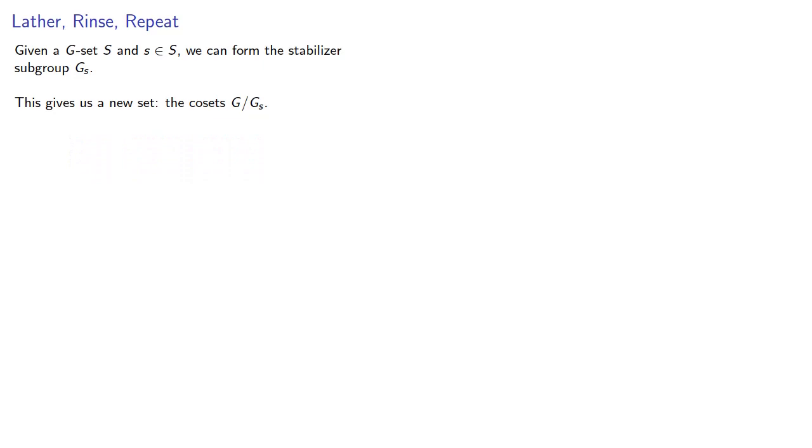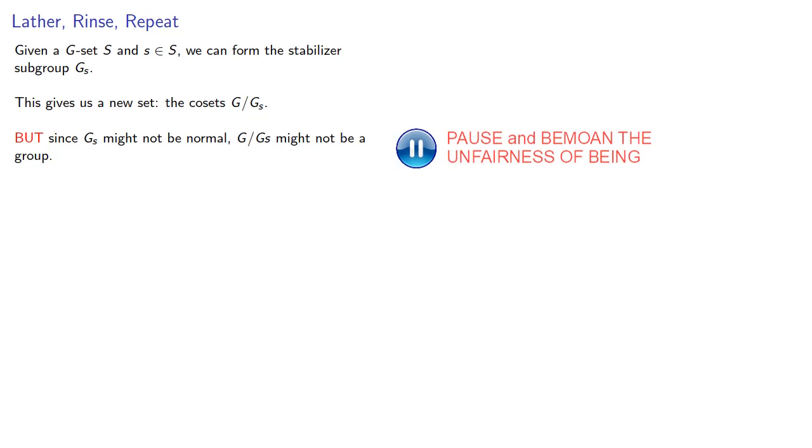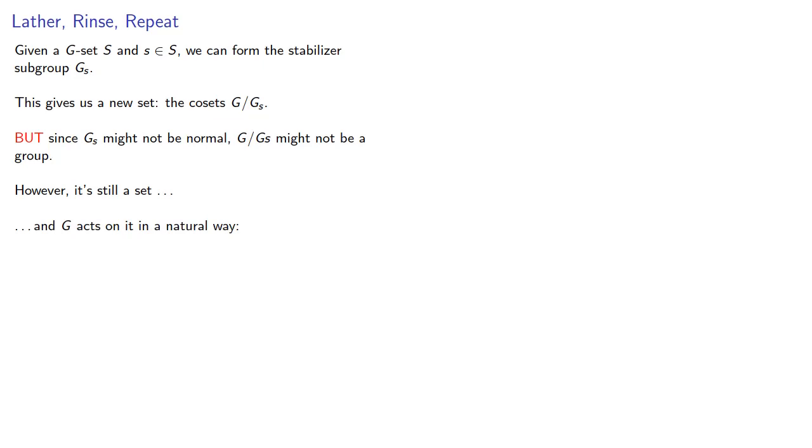Now, this is not always useful, since the stabilizer might not be a normal subgroup, the quotient group might not be a group. However, it's still a set, and G acts on it in a natural way.